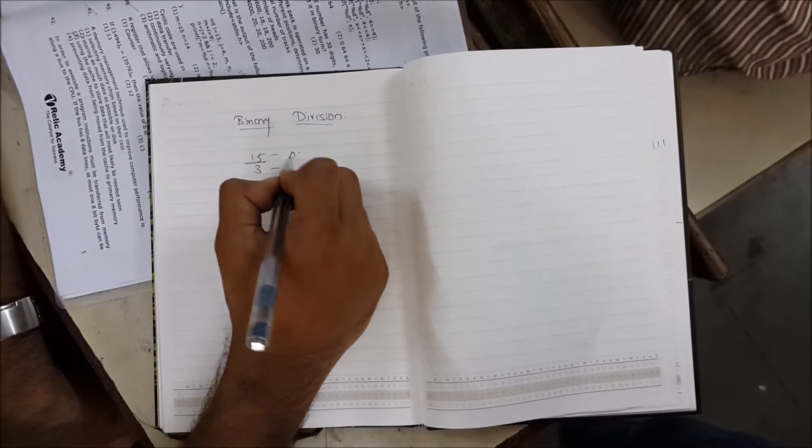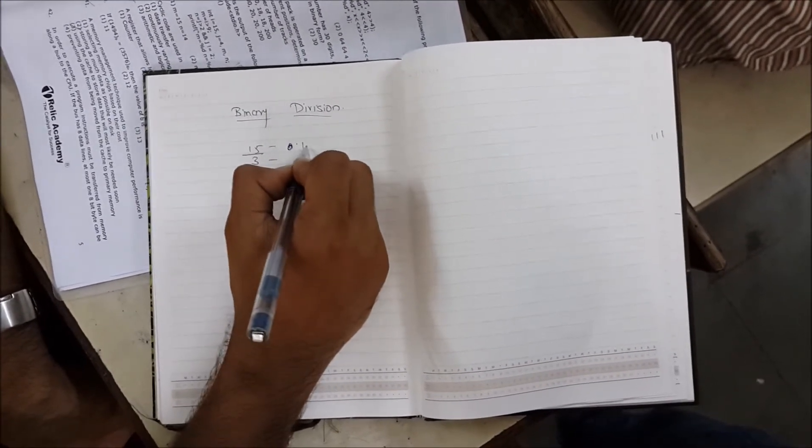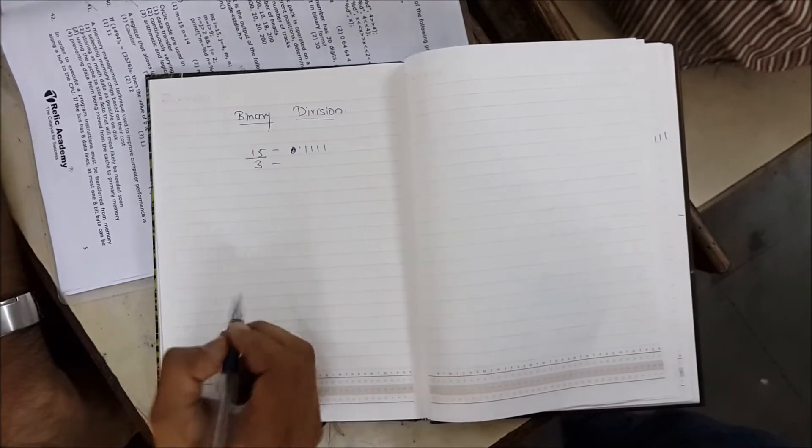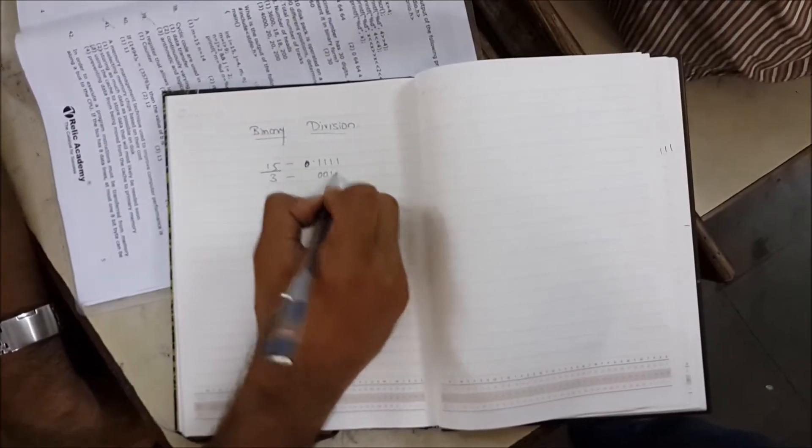So 15 is 1111, four ones. And 3 is 0011.